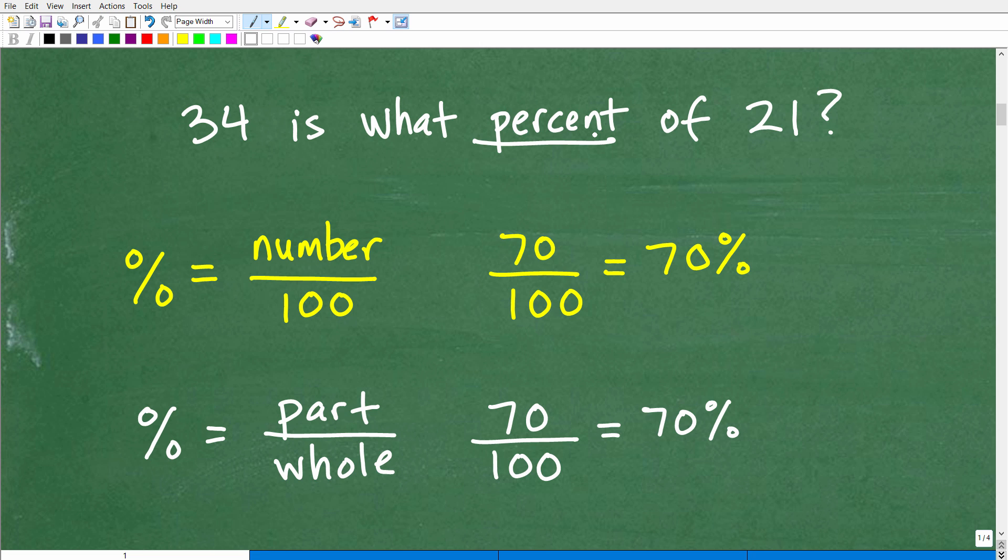So when we compare a number to 100, for example, if I compare 70 to 100 or write the fraction 70 over 100, this 70, if the denominator is 100, is the percent. So 70 over 100 is equivalent to 70 percent.